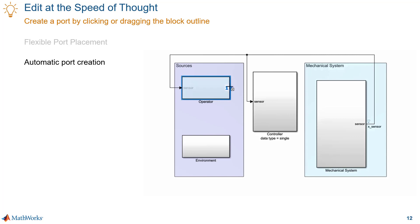This one is automatic port creation and it makes it easy to create connections between your model components. Instead of having to go into each subsystem in your model to create the ports and then make the connections, you can simply click and drag a block outline to create both a new port and signal.